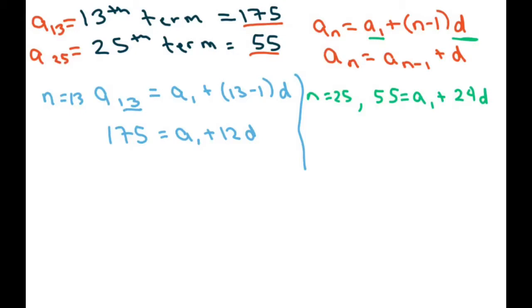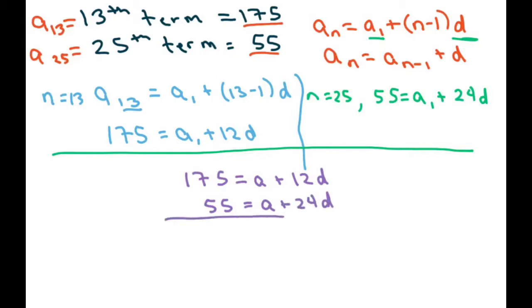Now we set it up, our system of linear equations. I'm going to put 175 equals a sub 1 plus 12d, and the second equation is 55 equals a plus 24d. And we're going to use elimination, so I'm just going to subtract.